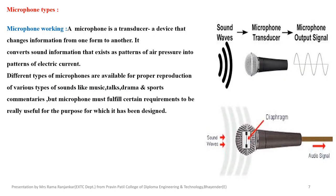Microphone working: a microphone is a transducer, which is a device that changes information from one form to another. It converts sound information that exists as patterns of air pressure into patterns of electric current. Different types of microphones are available for the production of various types of sounds like music, talks, drama, sports, and commentaries. A microphone must fulfill certain requirements to be useful for its intended purpose.